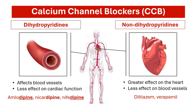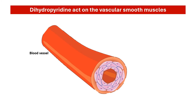In this video, we are going to focus on the dihydropyridine calcium channel blockers. Dihydropyridine CCBs act mainly on the smooth muscles of the blood vessels.